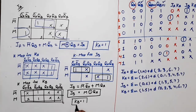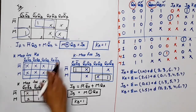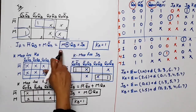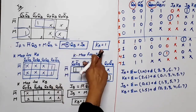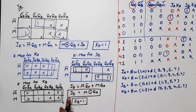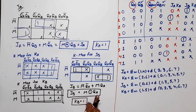Now we have all the values. JA = M XOR QB. KA = 1. JB = M XNOR QA. KB = 1.